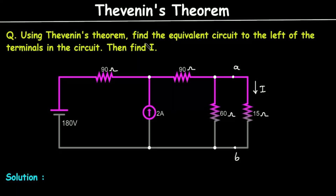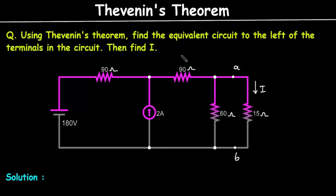In this video, we will solve a Thevenin's theorem example. Using Thevenin's theorem, find the equivalent circuit to the left of the terminals in the circuit, then find I.